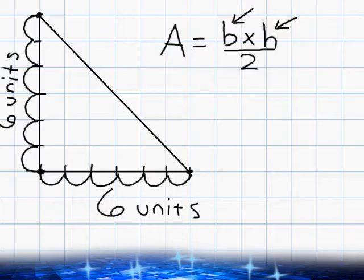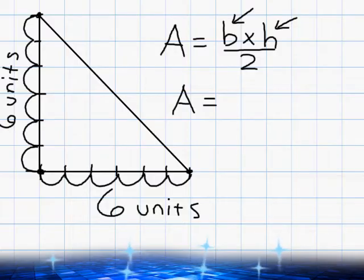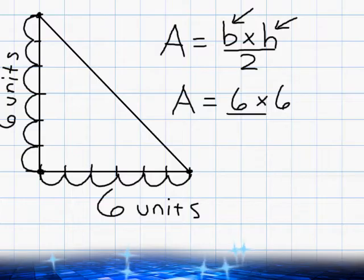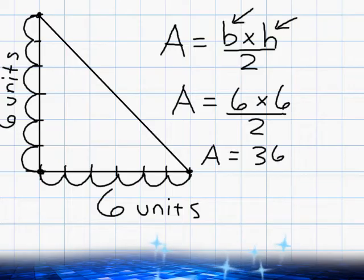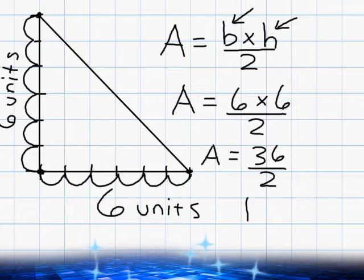Now that we know what the dimensions of this triangle are we are going to proceed with our equation. So we are going to substitute the b for base with 6 and the h for height with 6 as well and take that product and divide it by 2. The product of 6 times 6 is 36 and we're going to divide that number by 2. And when we do that we get a value of 18 square units.